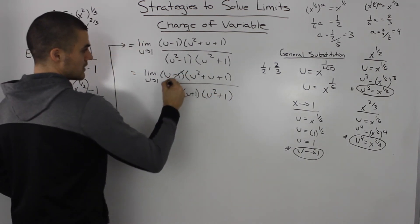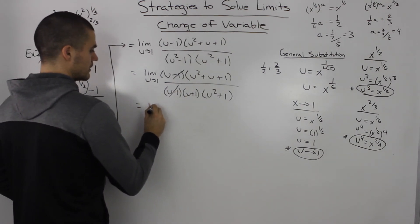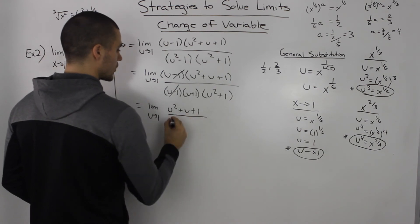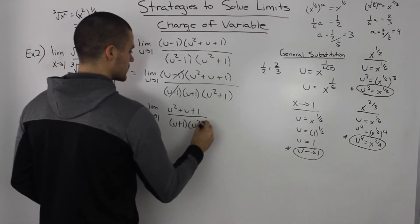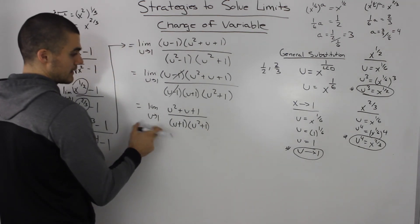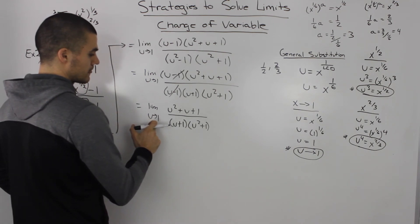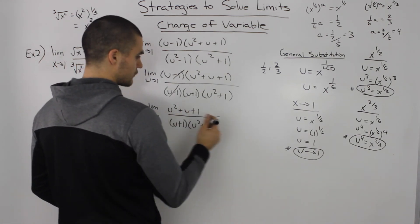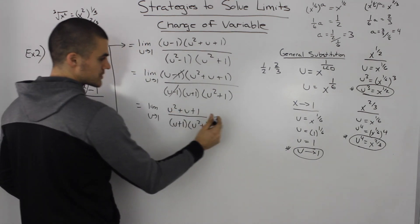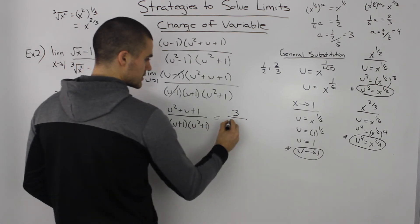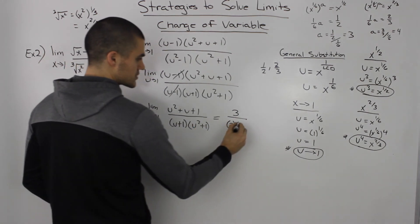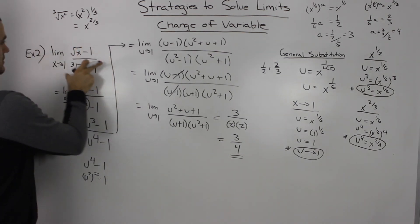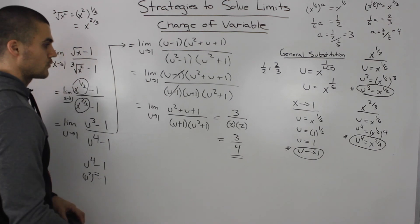Notice how the (u minus 1) factors cancel out. So we're left with the limit as u goes to 1 of (u squared plus u plus 1) over (u plus 1)(u squared plus 1). Now we can substitute 1 for u and the denominator won't be 0. The numerator gives 1 + 1 + 1 = 3. The denominator gives (1 + 1)(1 + 1) = 2 times 2 = 4. So our final answer is 3 over 4.